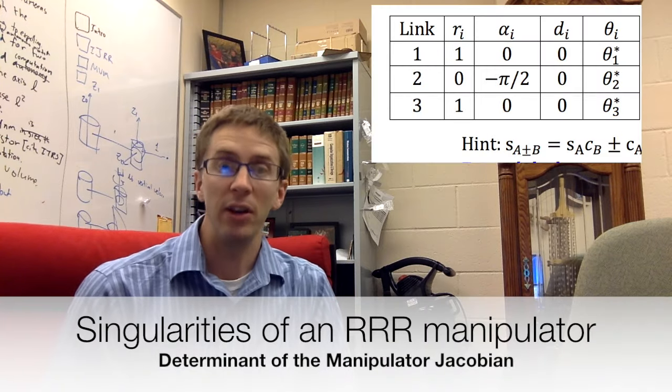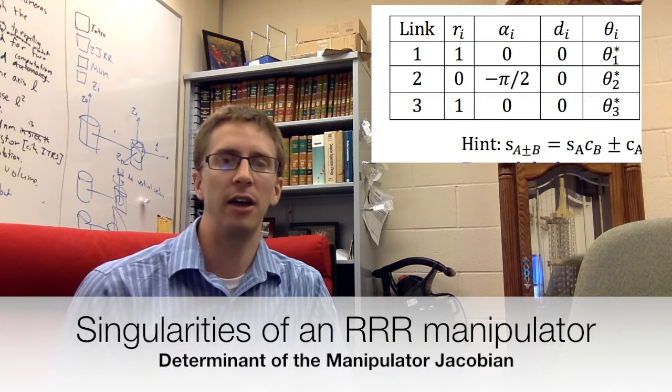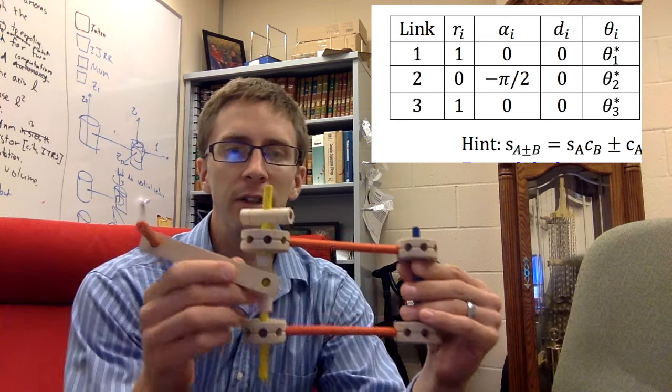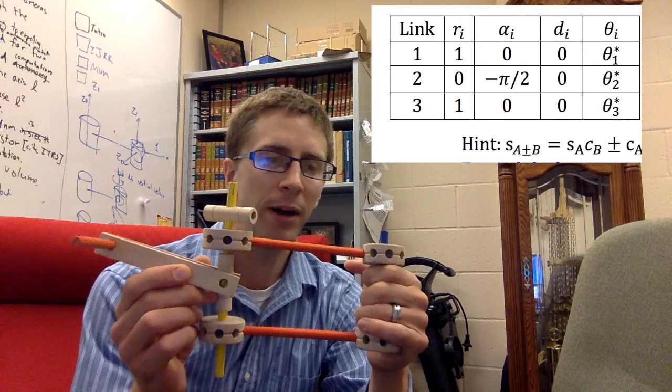On your final today, you had a problem where you needed to find the singularities of a Jacobian for a revolute-revolute-revolute robot. And here is my model of that revolute-revolute-revolute robot.